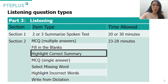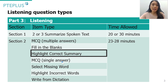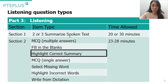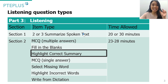In terms of the order of question types, Highlight Correct Summary will be the fourth question type you face in the listening section. The listening part is actually split into two sections. The first section contains just the Summarize Spoken Text task — you'll get two to three of these questions, and each one is timed individually at 10 minutes each.